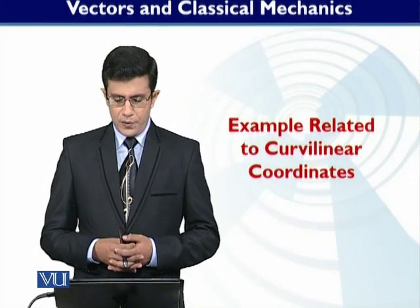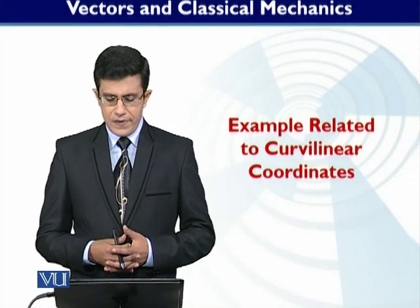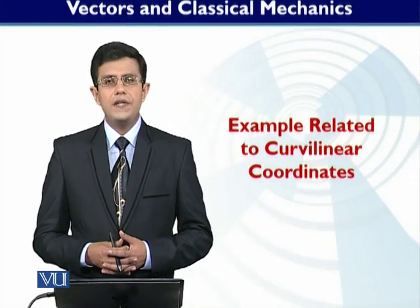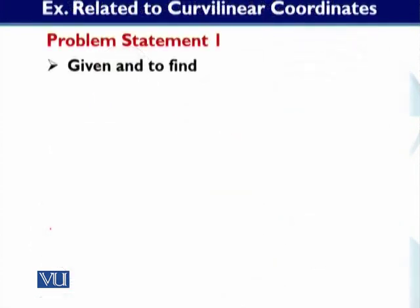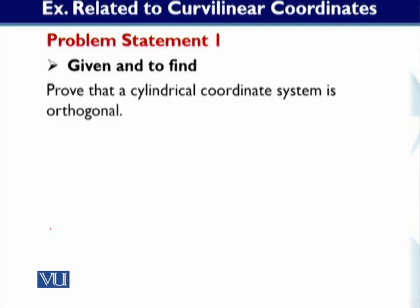The title of this module is 'Example Related to Curvilinear Coordinates.' We are going to discuss two problems. Let's go to problem statement number 1. The problem says: prove that the cylindrical coordinate system is orthogonal.